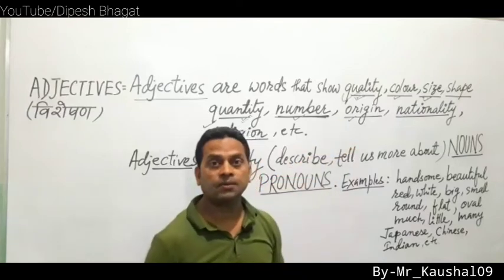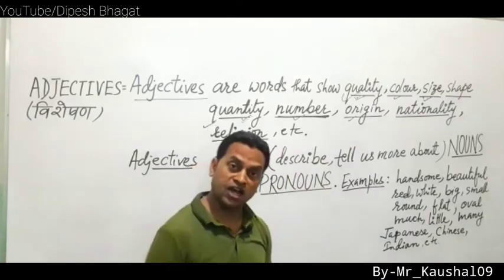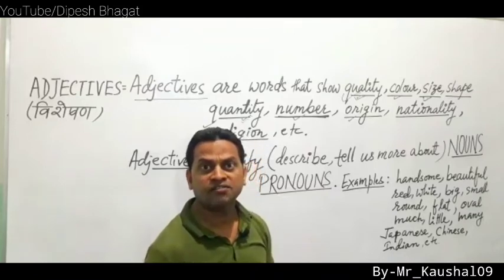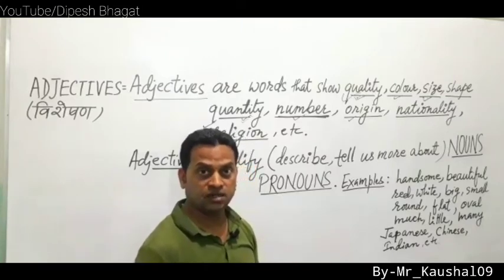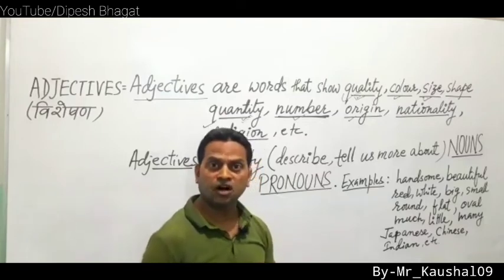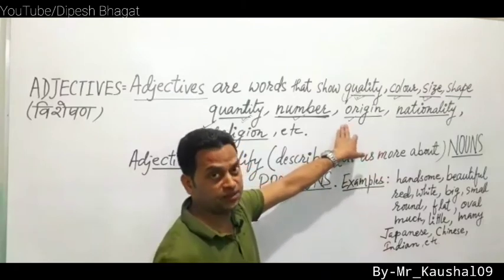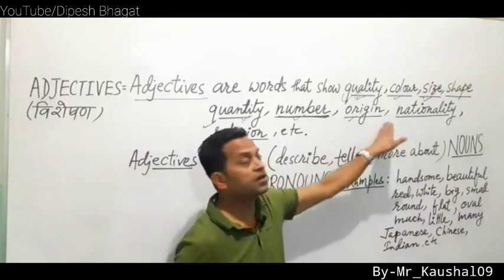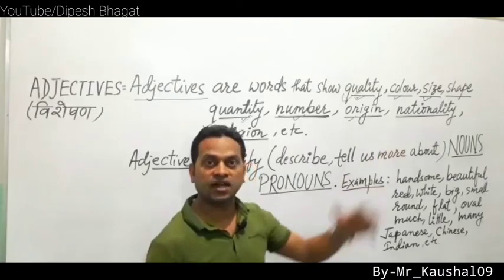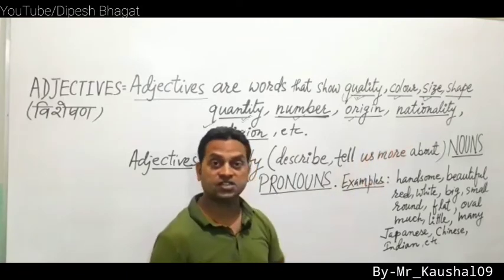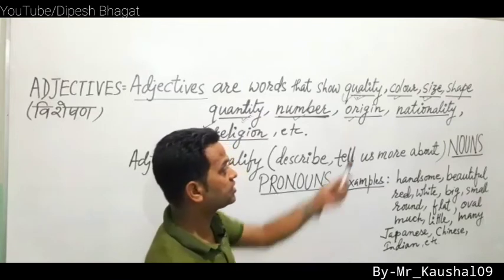Adjectives of origin: words showing where something was made or which country it comes from. Examples: 'I have a Chinese pen,' 'I have a Japanese television,' 'I have an Indian fan,' 'an American book,' 'an American dictionary.' Chinese, Japanese, Indian, American are adjectives of origin. Nationality adjectives are similar — for example: we are Nepalese, they are Indians, he is African, he is American.